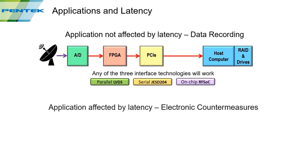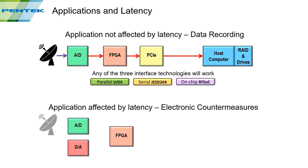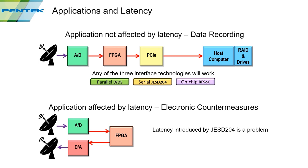An application that is very sensitive to latency is electronic countermeasures. An airborne system receives a radar signal from a ground targeting system; the FPGA must process and modify that signal to appear as a return from a different position or velocity, then retransmit it quickly and with a determined latency. In this application, JESD204 is a problem, and the only real solutions are parallel or RFSOC.